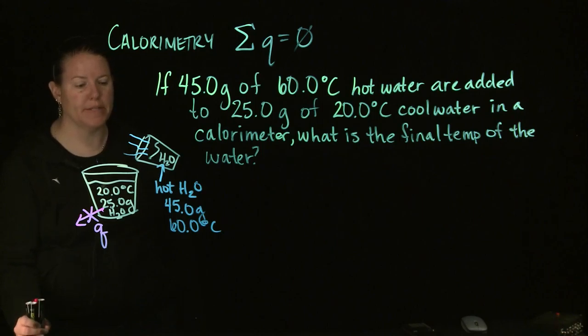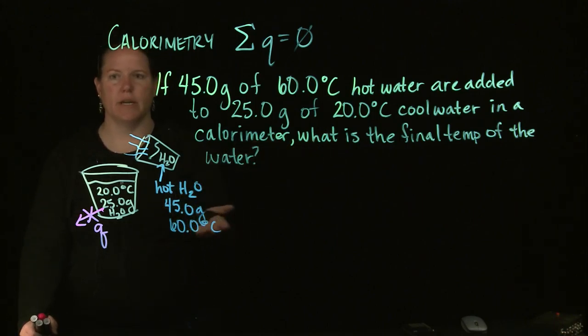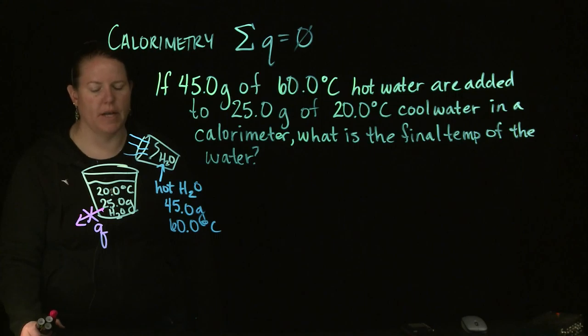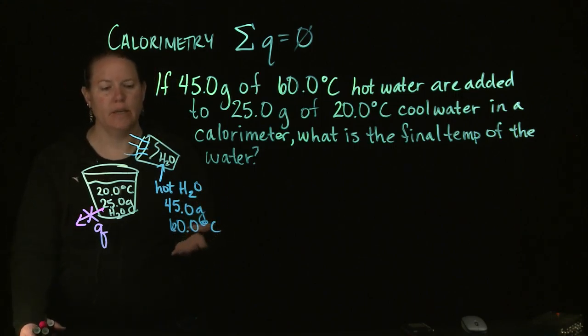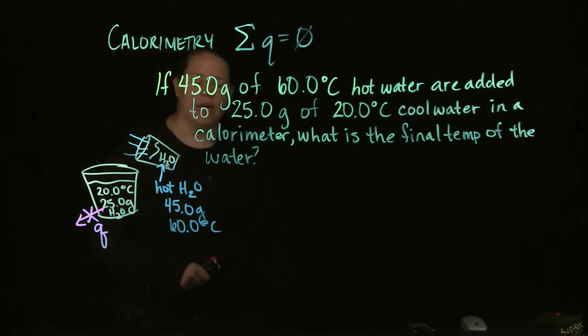So if you get a number that's like, in the end if you got a final temperature that was like 120, you'd be like well that's ridiculous. Because it can't exceed 60. And it actually needs to be somewhere between 60 degrees and 20 degrees. So chemistry common sense, very helpful here.